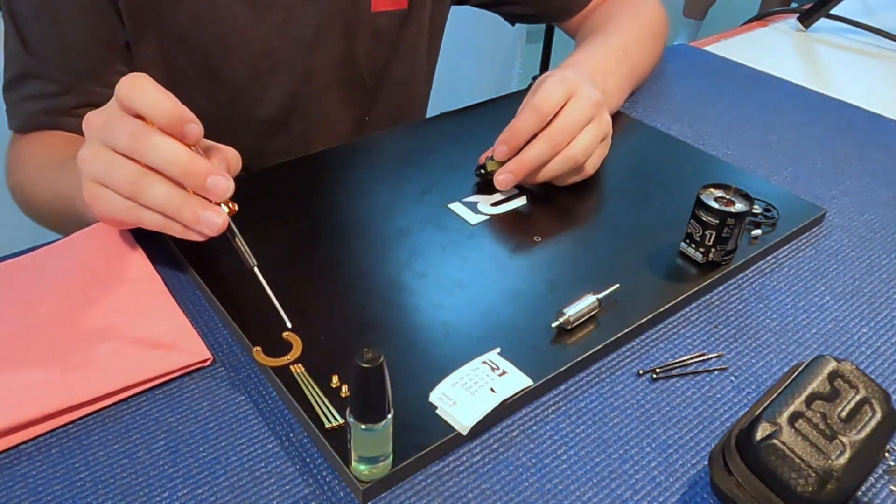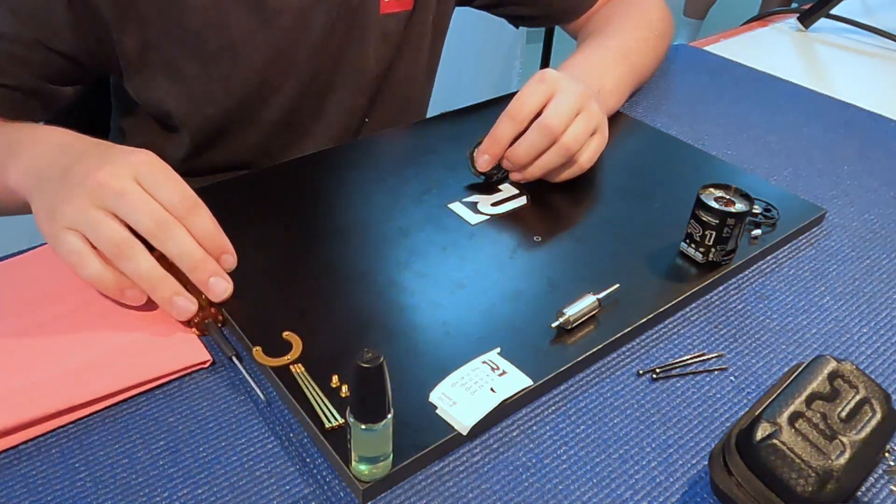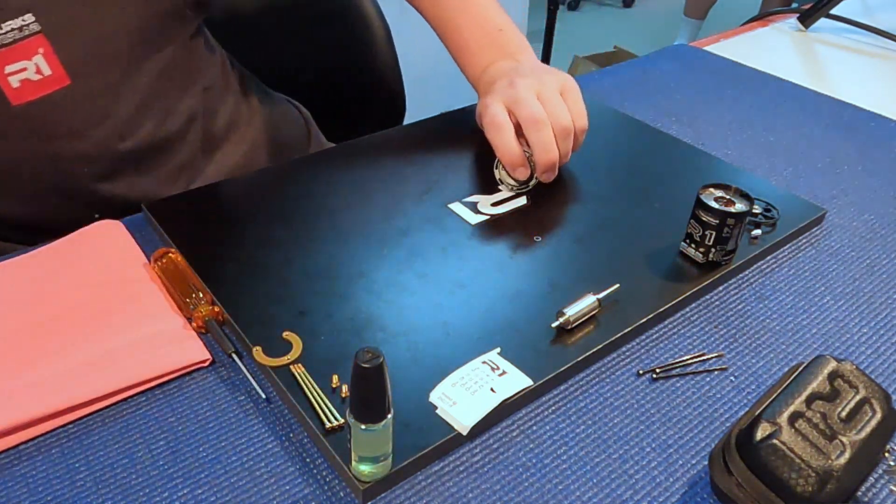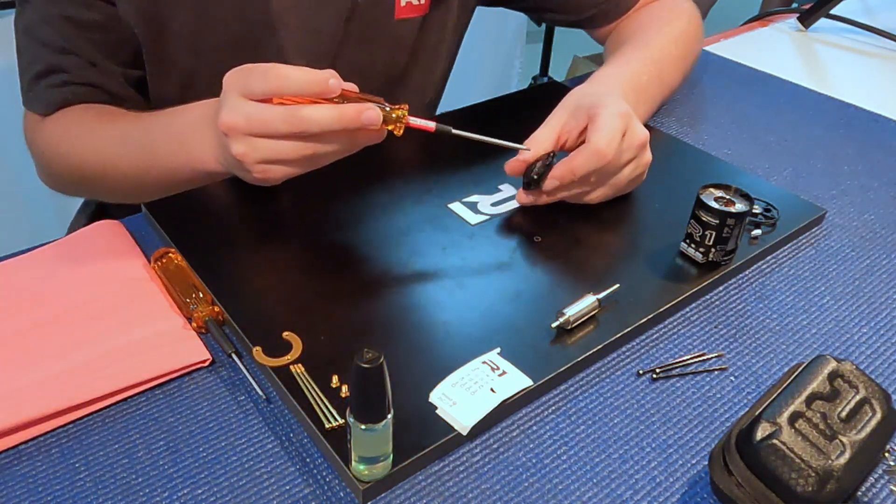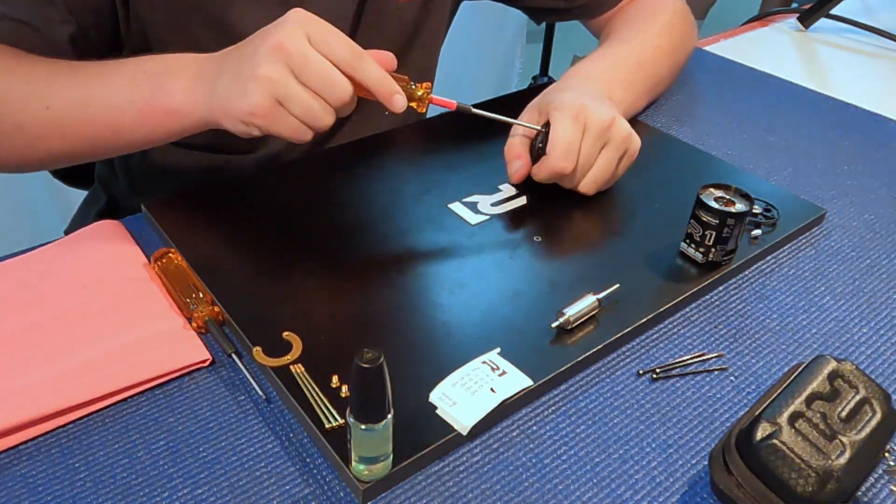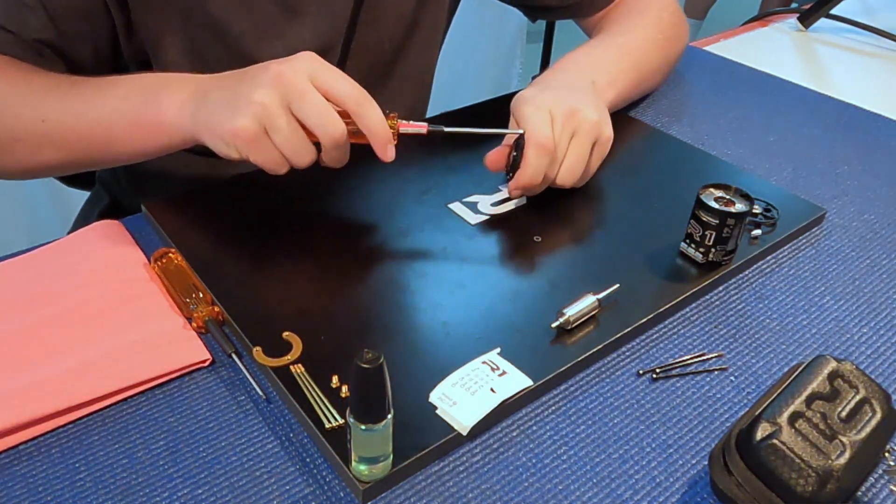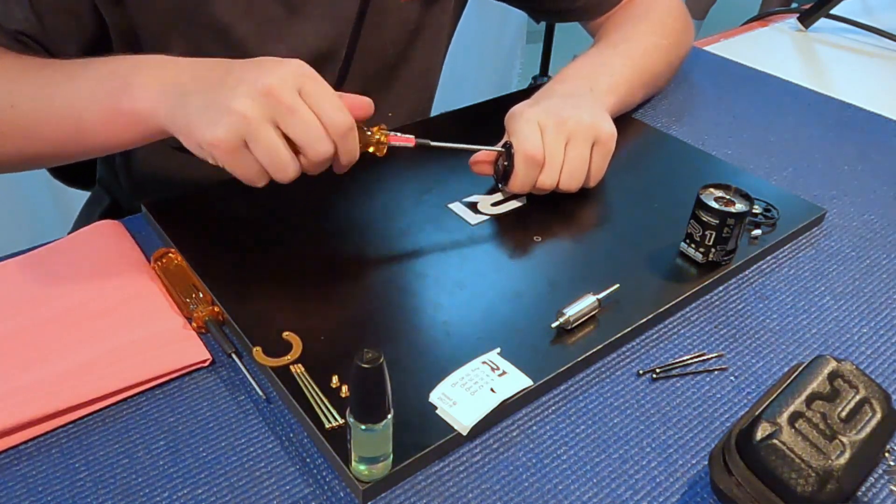So first we'll put on the timing ring here, so I'm going to need a 2mm screw. Take these out. Should be pretty tight in the factory.